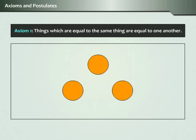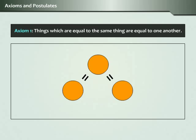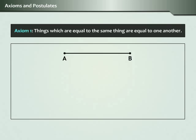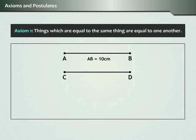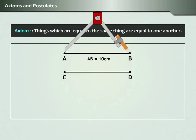Axiom 1: Things which are equal to the same thing are equal to one another. For example, draw a line segment AB of length 10 cm. Draw a second line segment CD having length equal to that of line segment AB using a compass.